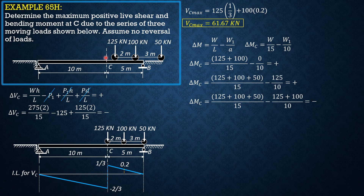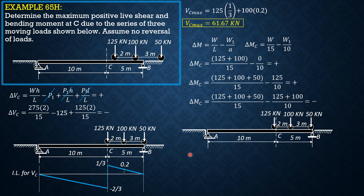So the preceding position — load 2 just to the right of C, or simply over C — is what makes the moment at C maximum. The position that will maximize moment at C is when the 100 kN load is over C. You may use the influence line diagram. The ordinate at C is a·b over L, which is 10 times 5 over 15 equals 50 over 15, or 10 thirds. Compute ordinates under the 125 kN and 50 kN loads by similar triangles, then compute Mc max.